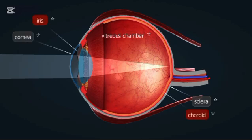The vitreous chamber is the largest part of the eye, located between the lens and the retina. It's filled with a clear, gel-like substance called the vitreous humor.